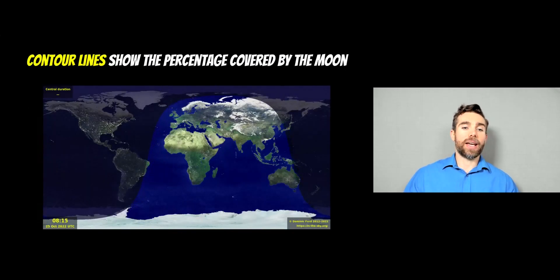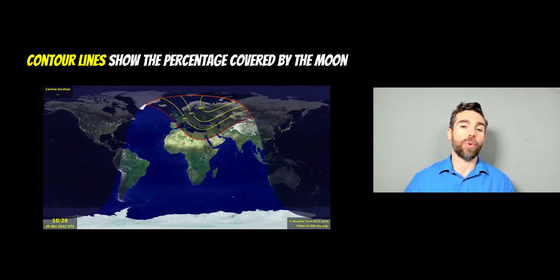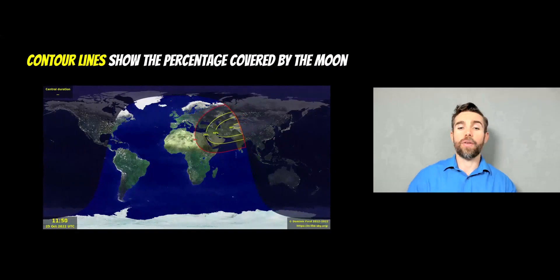So here is a visualization of where it's going to be visible. You can see it starts out over Europe and then it will move across more towards Asia and obviously get the top half or top part of Africa as well.